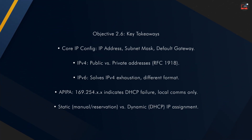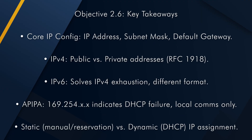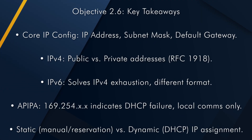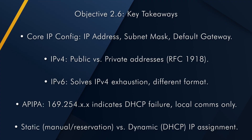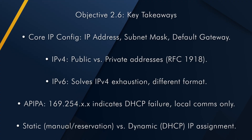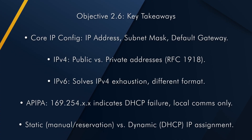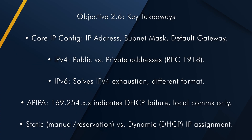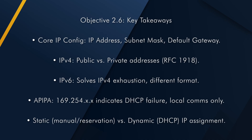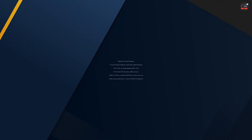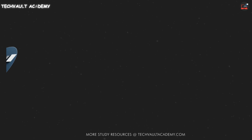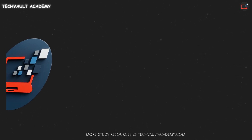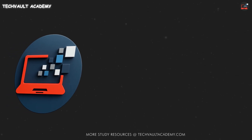Understanding these IP addressing fundamentals — IPv4 versus IPv6, public versus private, APIPA, static versus dynamic, and the roles of subnet masks and gateways — is absolutely essential for configuring any SOHO network. That's our deep dive into Objective 2.6. Thanks for joining Tech Vault Academy.